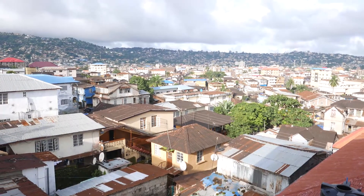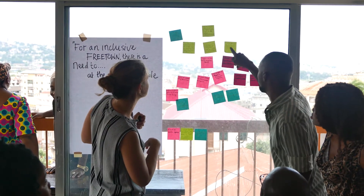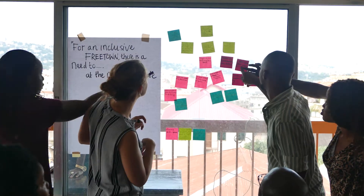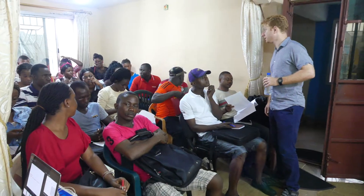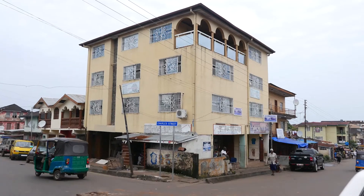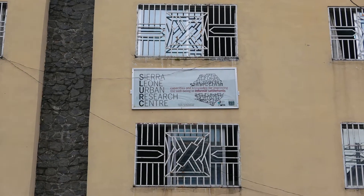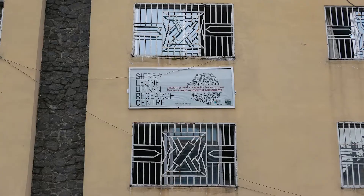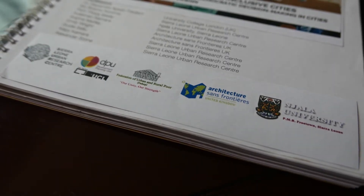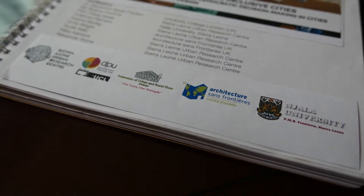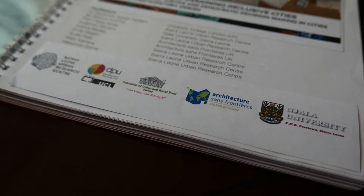In August 2017, staff from Architects Without Borders UK came to Freetown, Sierra Leone to run a participatory planning and design workshop in conjunction with the Sierra Leone Urban Research Centre, the Development Planning Unit — the department of the Bartlett Faculty of the Built Environment of University College London — and Njala University.